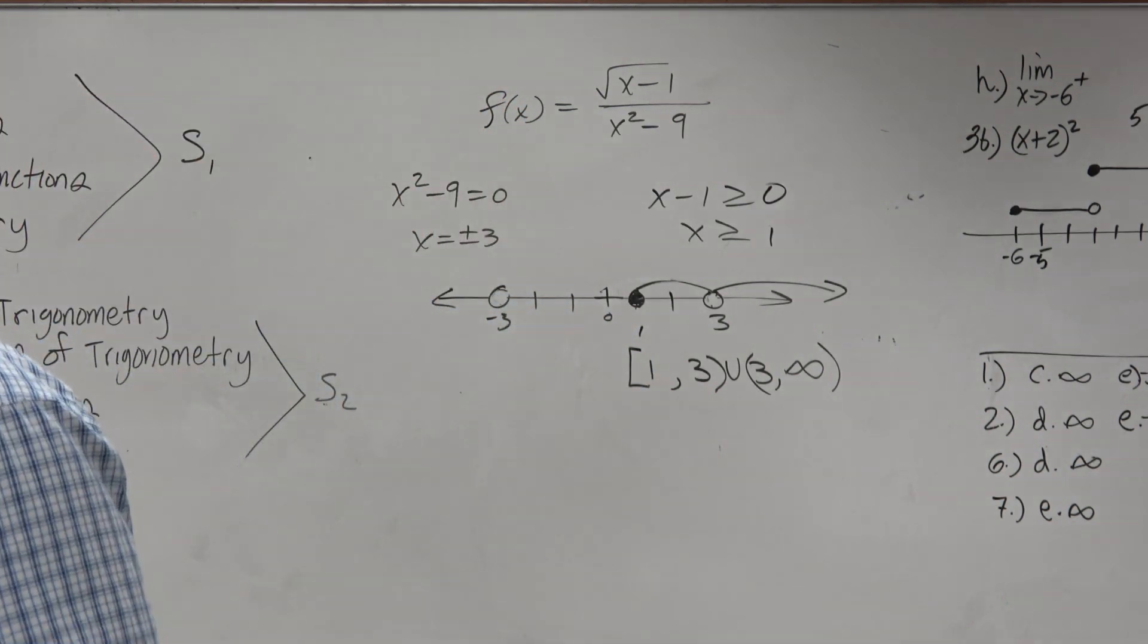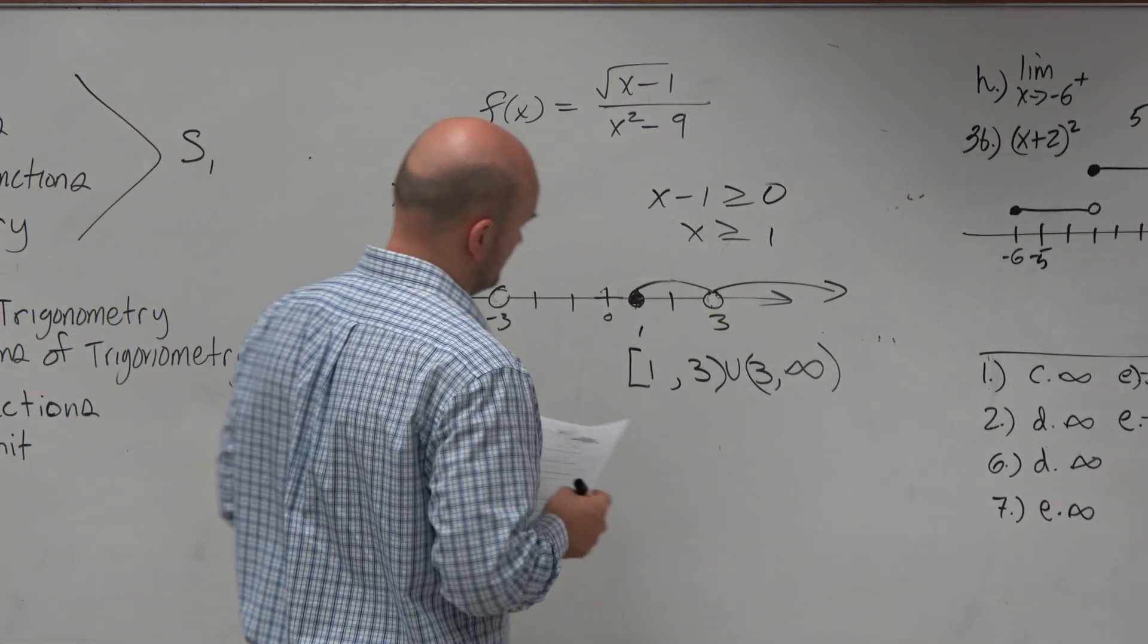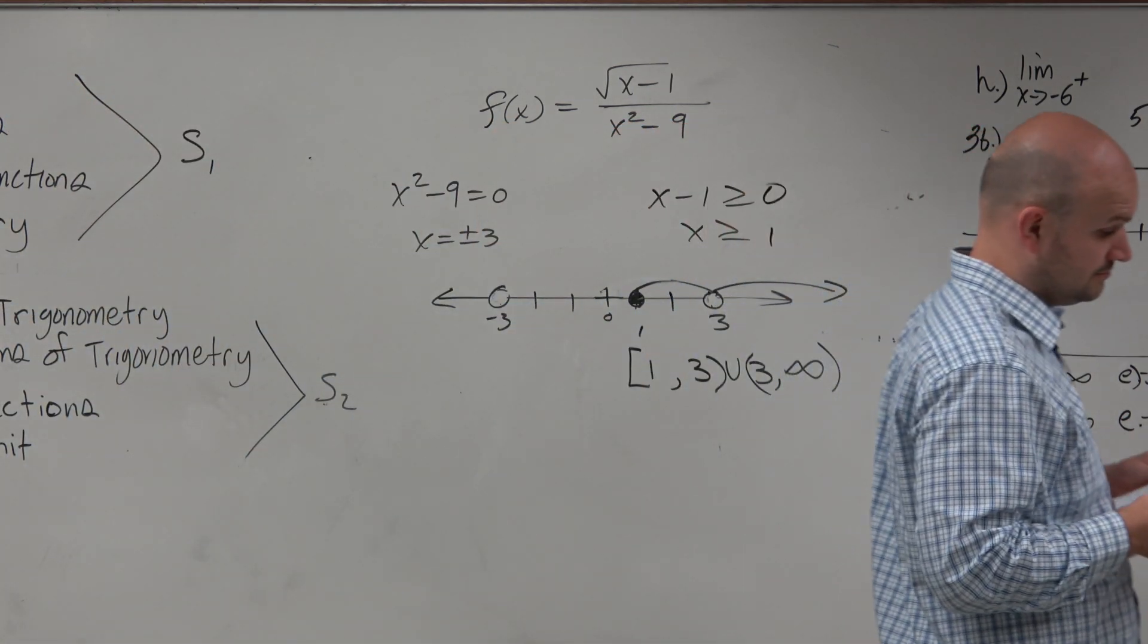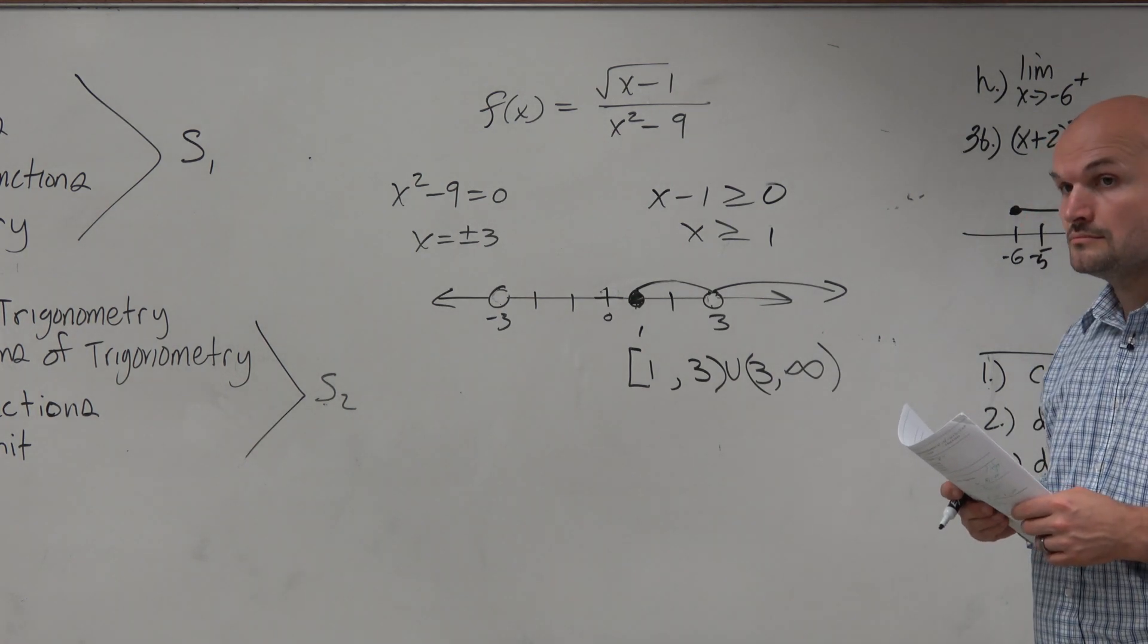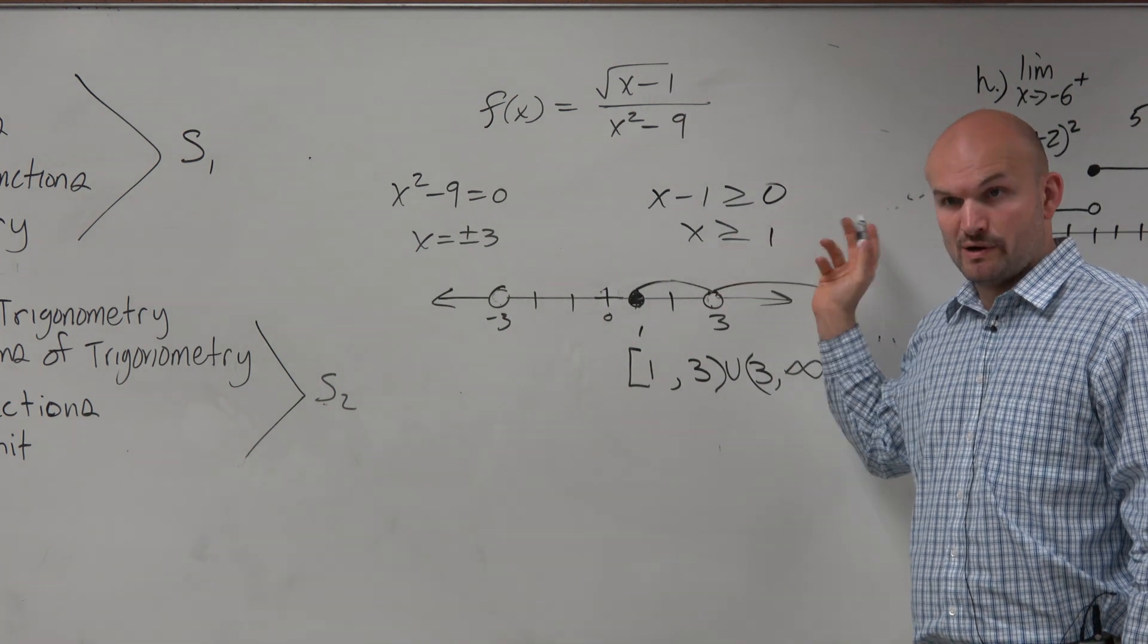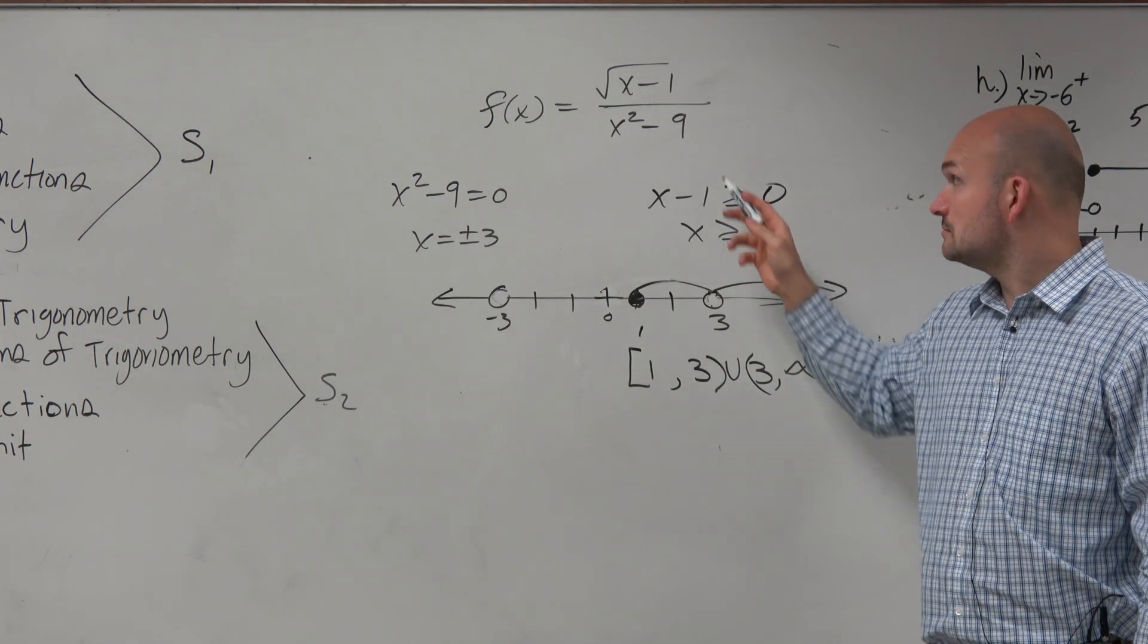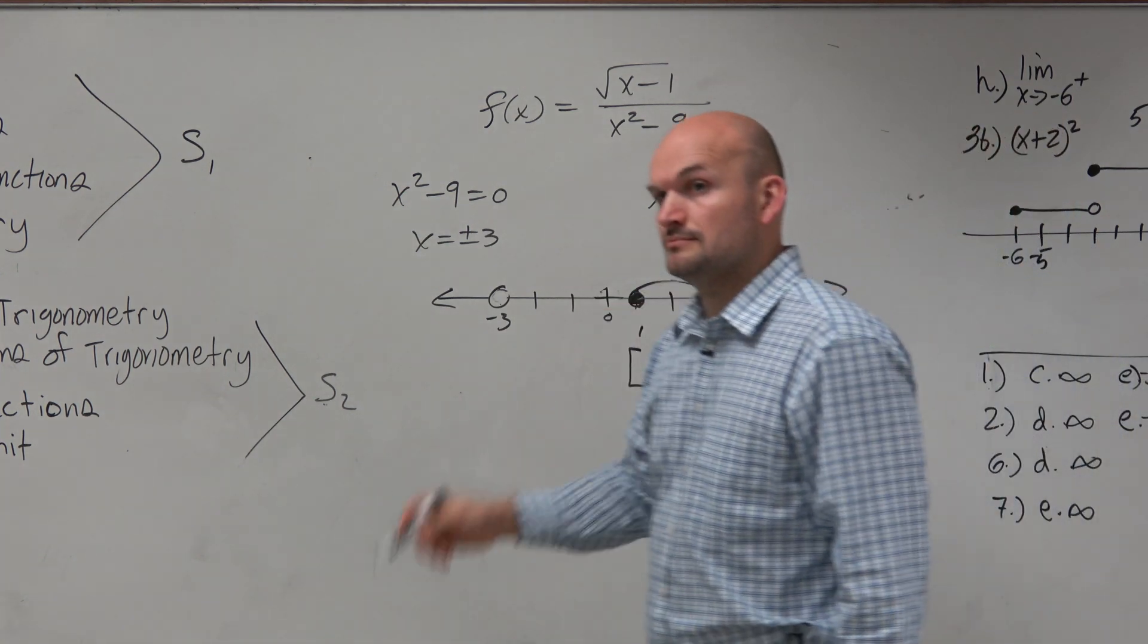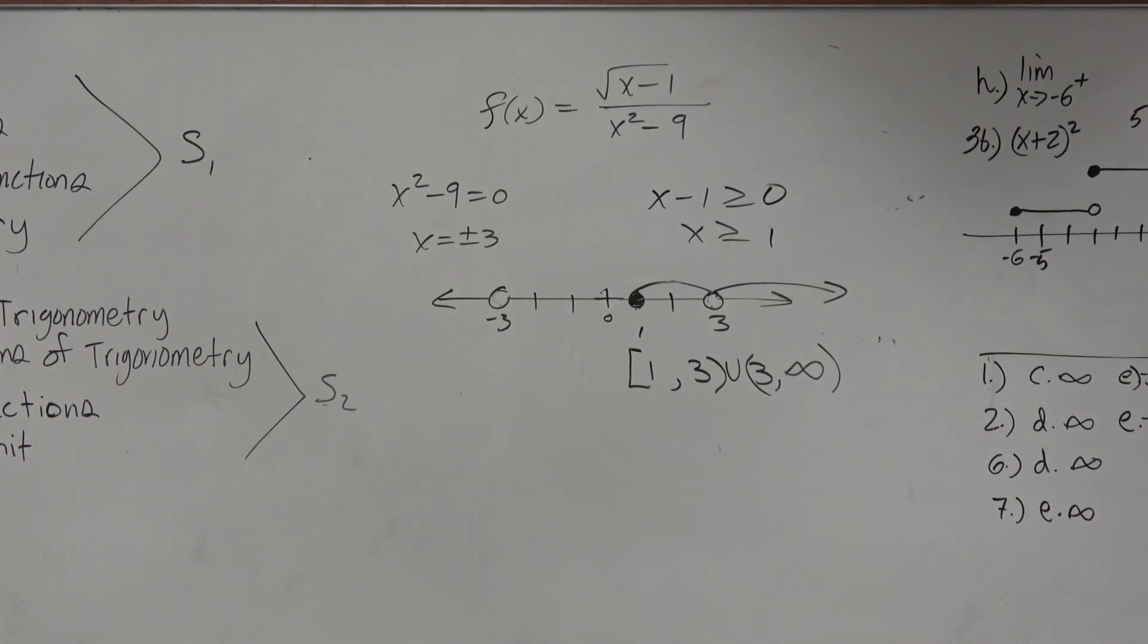Student asks: Because x is equal to 1 or greater, because of the radical? Yes. It couldn't equal 3 or negative 3, but it had to be 1 or greater.